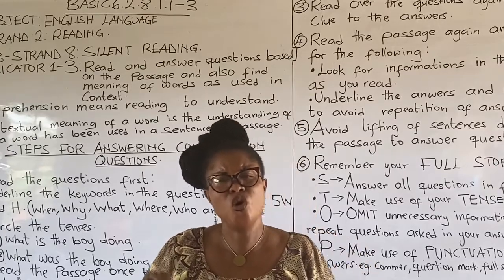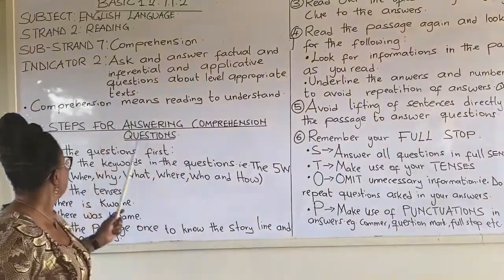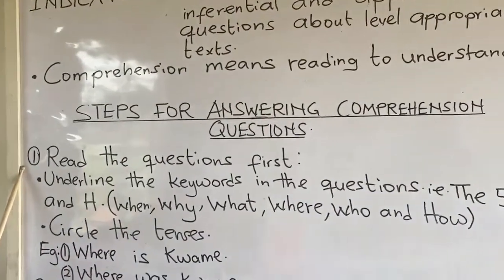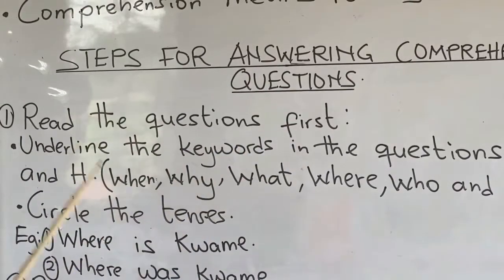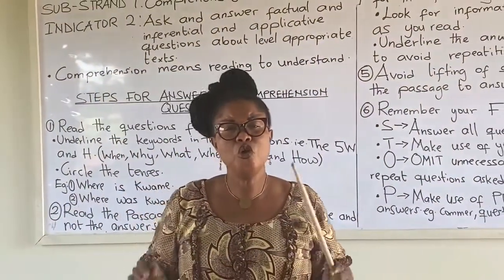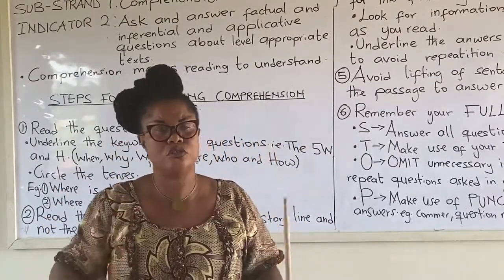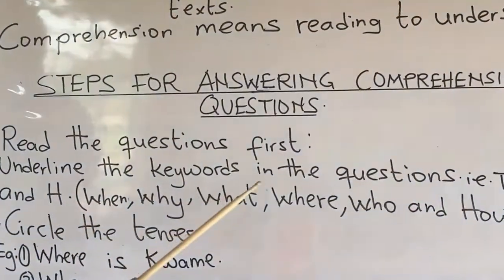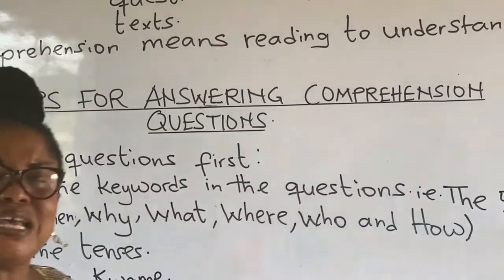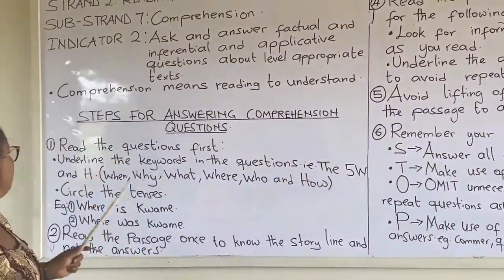So children, we are going to look at the steps used in answering comprehension questions. Step one: read the questions first. When reading the questions, you need to note some points. Underline the key words in the questions. The key words are the five W's and H: when, why, what, where, who, and how.